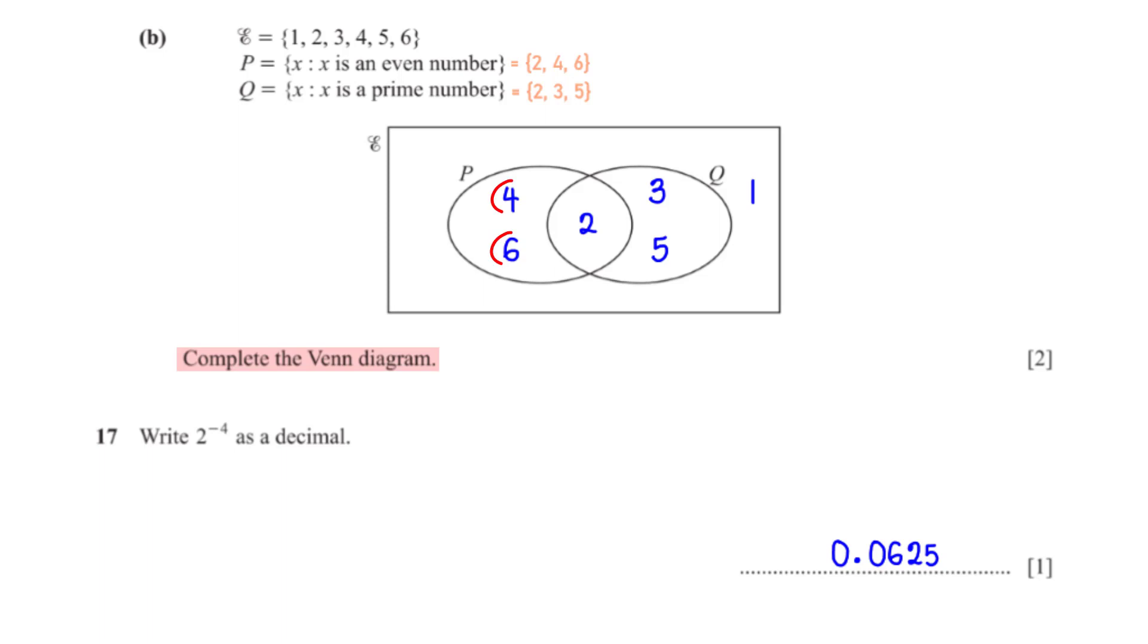After taking out 2, the remaining elements in set P are 4 and 6. For set Q, the remaining elements are 3 and 5. From the universal set, we see that the number that is not in set P and not in set Q is 1.